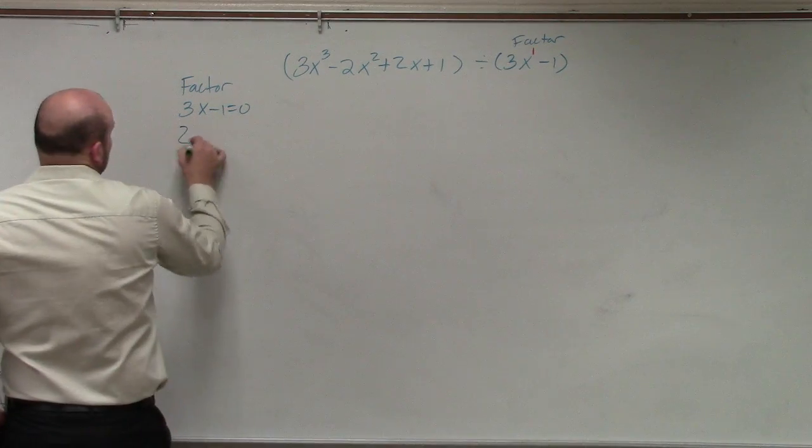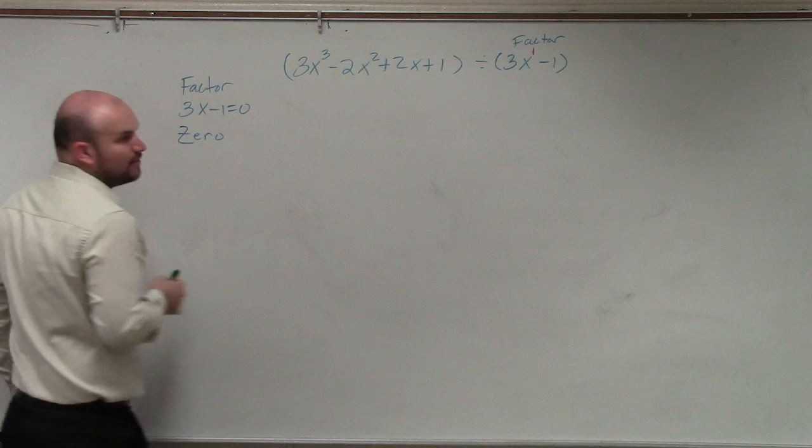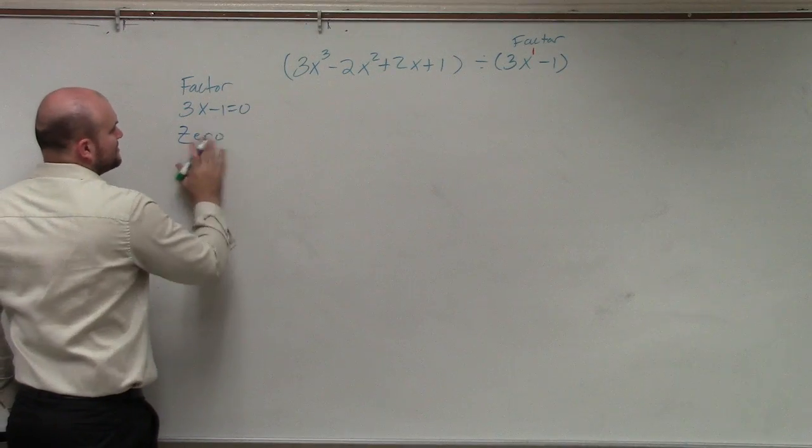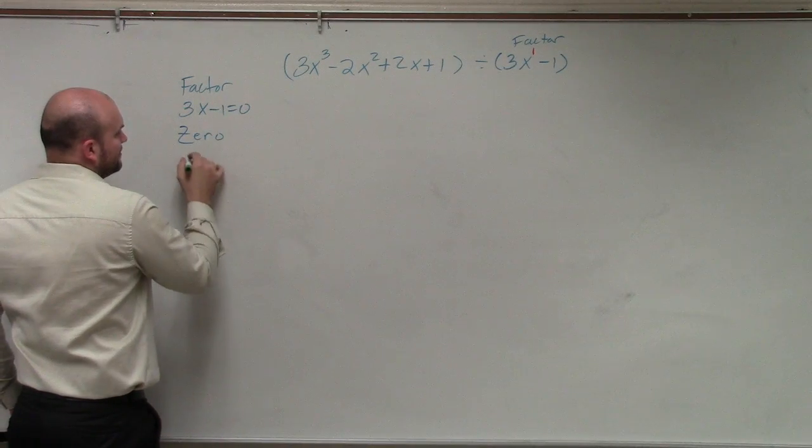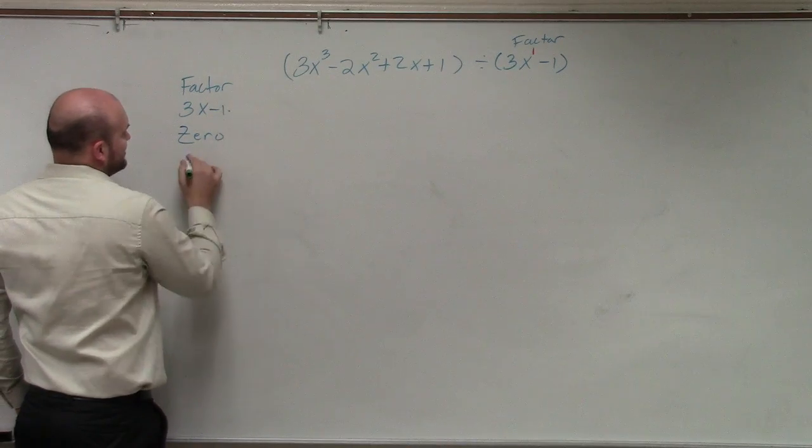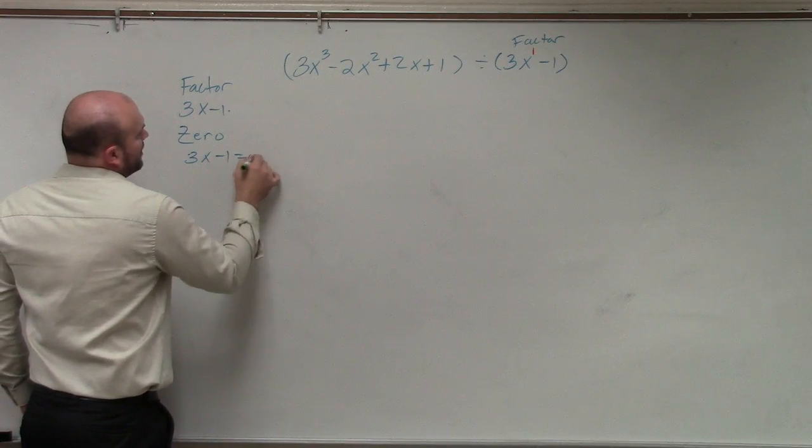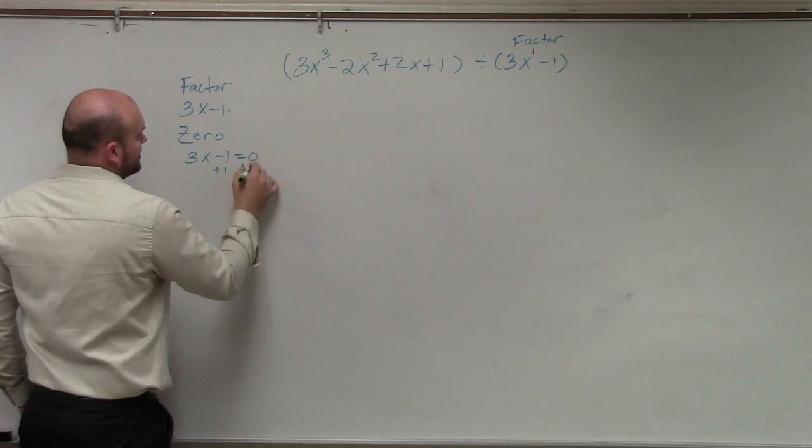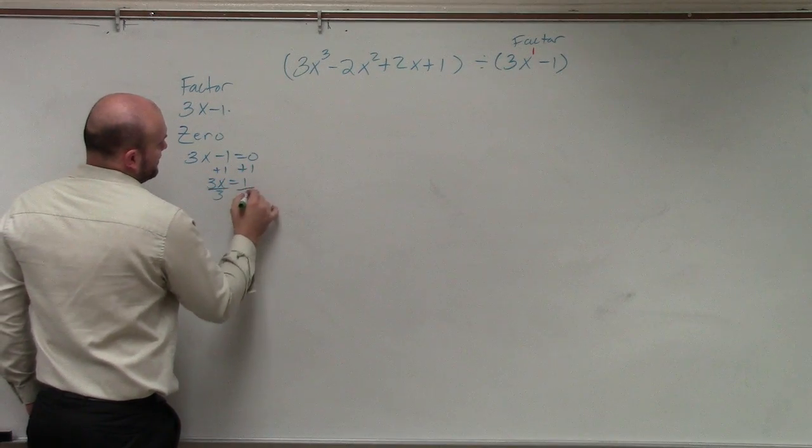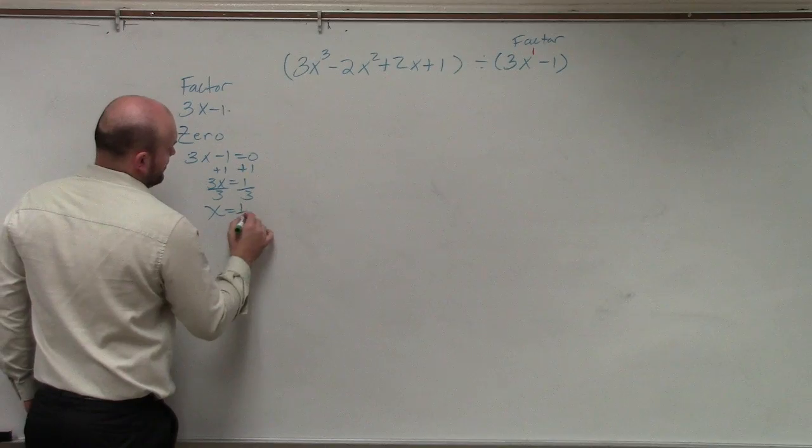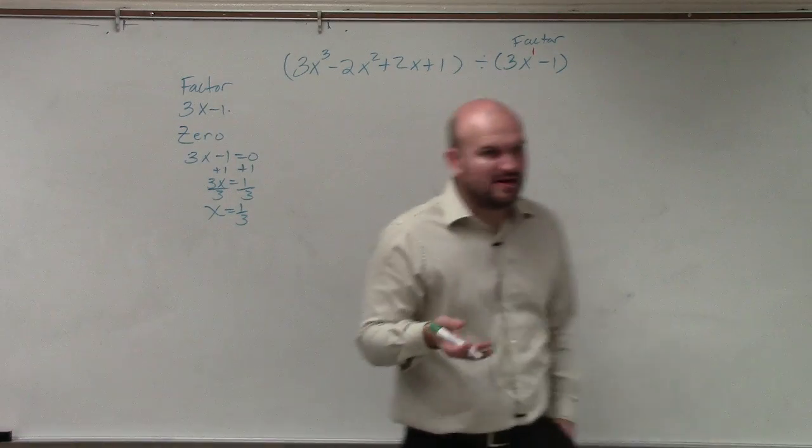So now we can go ahead and identify what the zero is. The zero is going to be, that's your factor: 3x minus 1 equals 0, plus 1, plus 1, 3x equals 1, divided by 3, divided by 3, x equals 1 third. So everybody follow me, we always use the zero with our synthetic division.